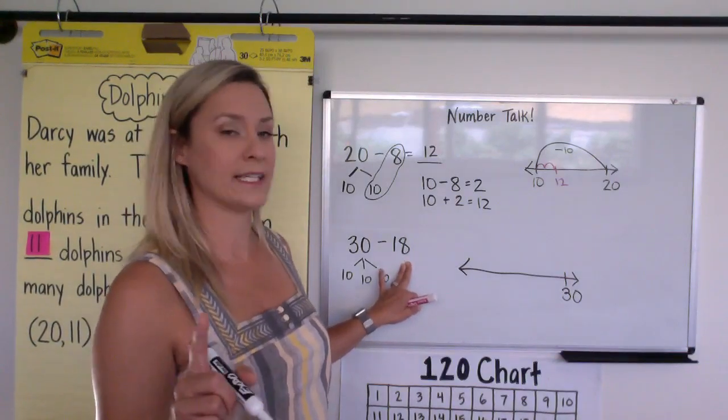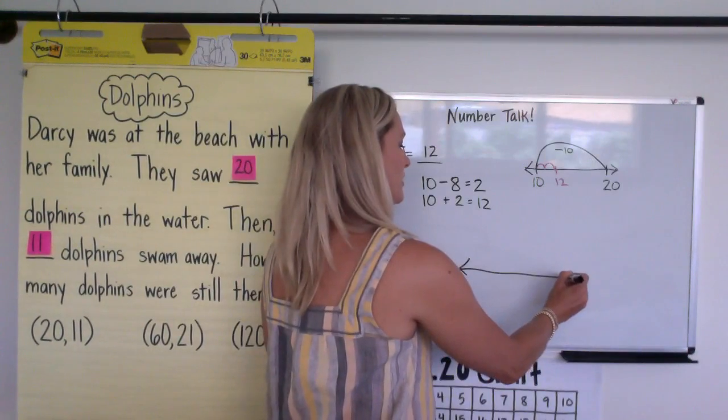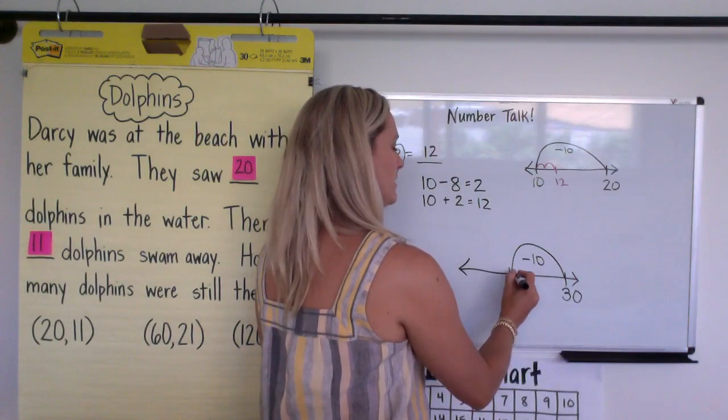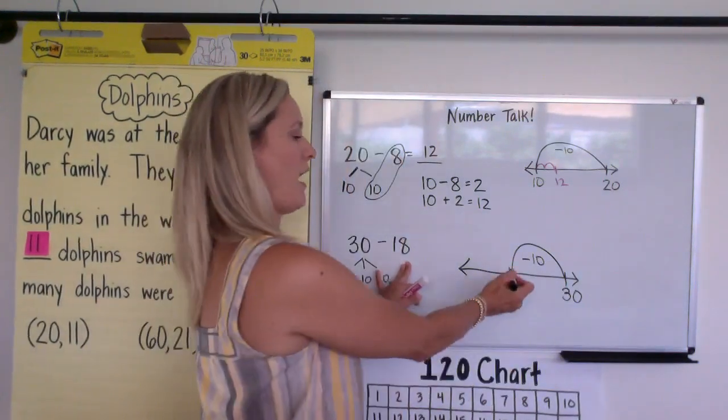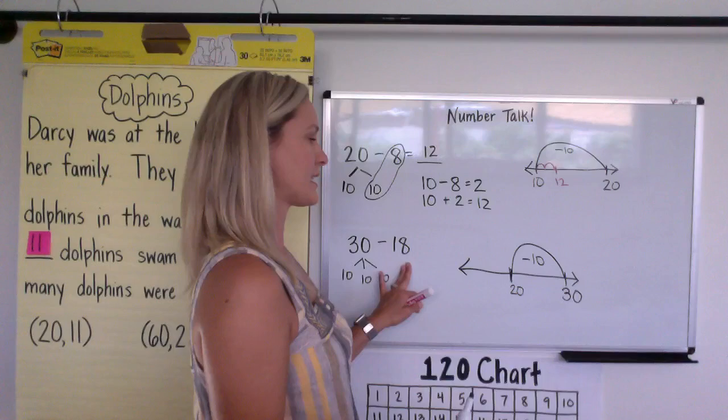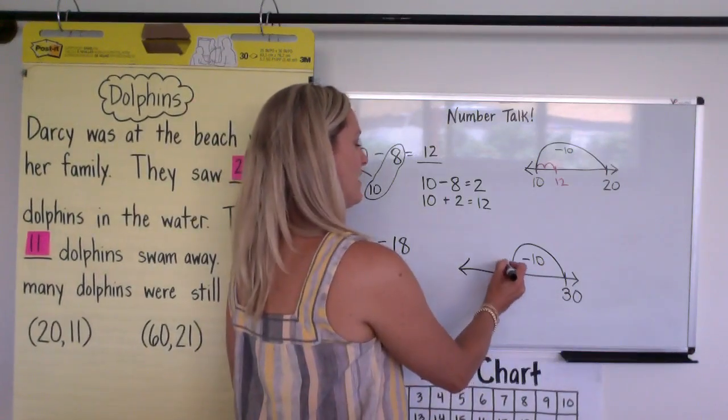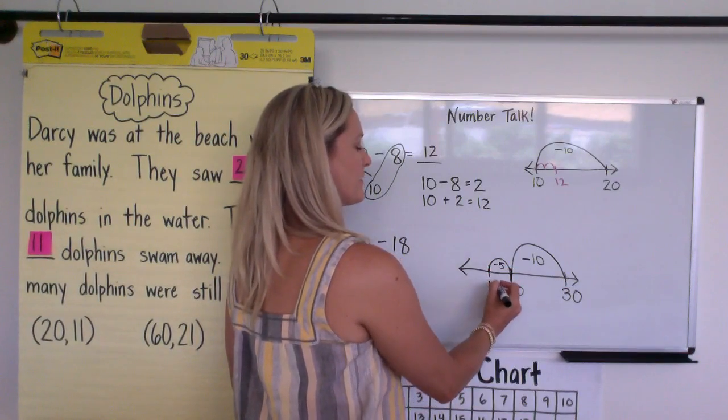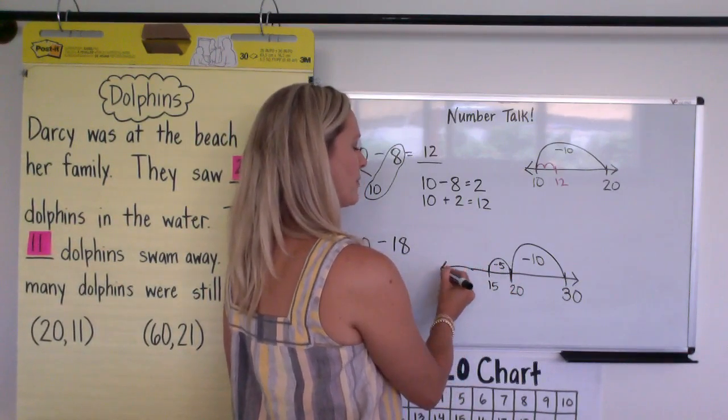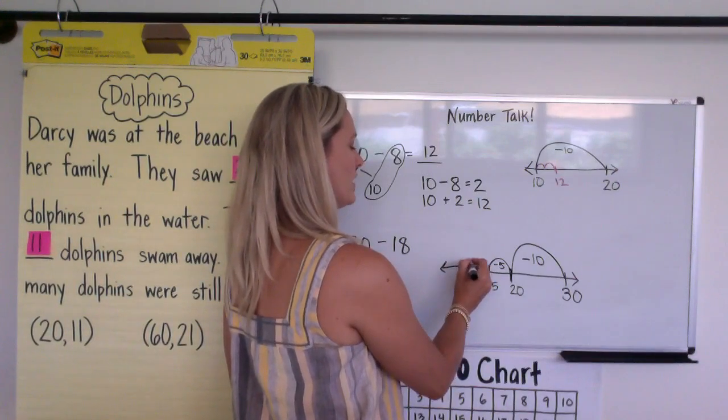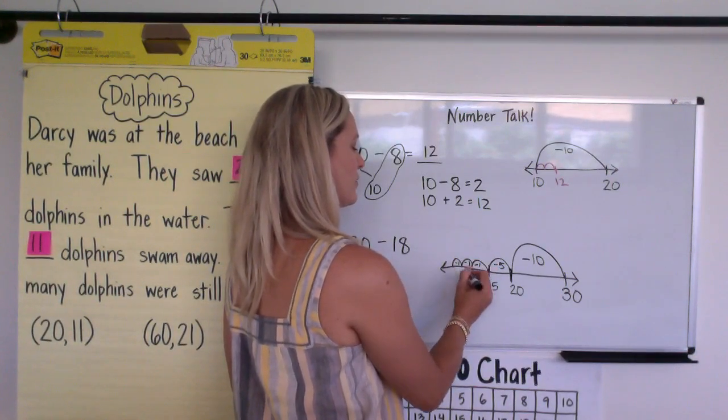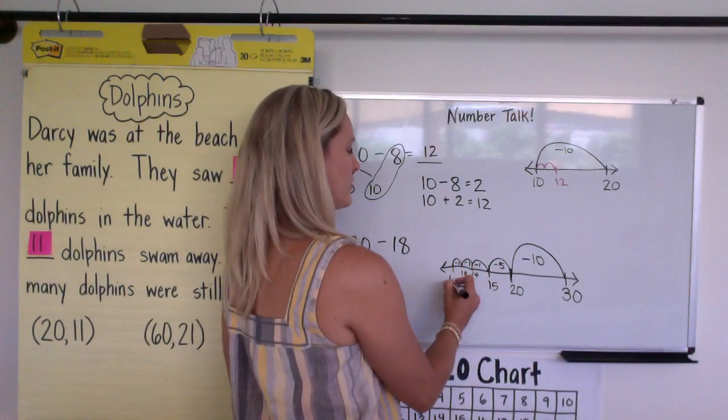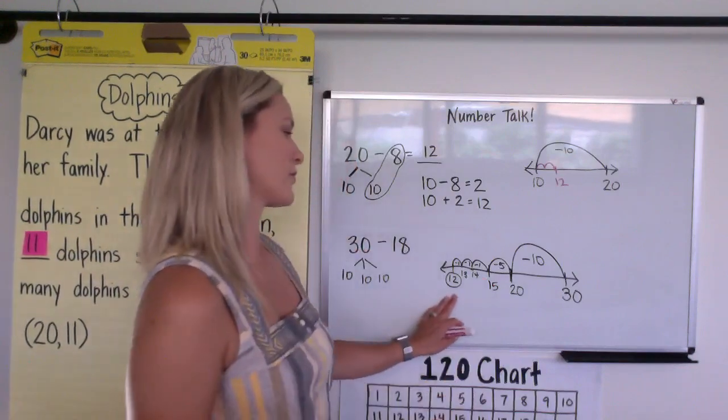My guess is many children would do 30 minus 10 first and get 20, and then either hop back those 8 or maybe take a hop of 5. This is my guess - most kids will probably take a hop of 5 and get to 15, and then most kids will probably say I need 3 more left: 1, 2, 3. Each one of those is minus 1. So 15 minus 1 is 14, 13, 12, and our answer is right here.